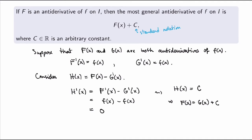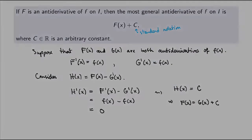Now this is not really a formal proof, because here I'm using the statement that the derivative of a constant is zero, which is certainly true. But how do I know that only constant functions are such that their derivatives are zero? This is not so obvious, and to fill the gap in this proof I would need to use the mean value theorem, which we will see very shortly. But meanwhile, this is a general argument for why any two antiderivatives of the same function will always differ by addition of a constant.